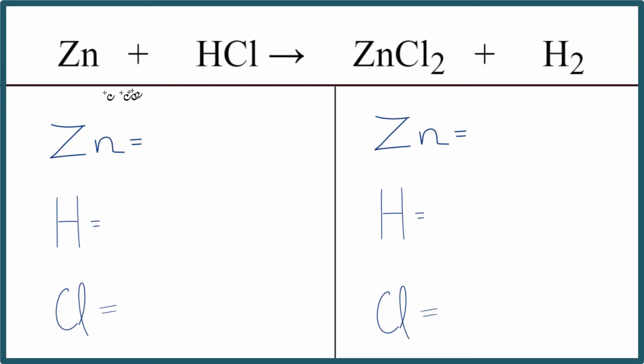In this video, we'll balance the chemical equation Zn plus HCl yields ZnCl2 plus H2. This is zinc plus hydrochloric acid.